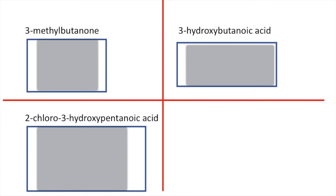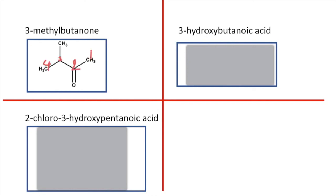We're down to the final three now. The first one top left is 3-methylbutan-2-one — so it's going to be a ketone with a methyl group coming off carbon number three, meaning the ketone group has got to be on carbon number two. There you have your four carbon chain — one, two, three, and four — with your methyl group coming off carbon number three.